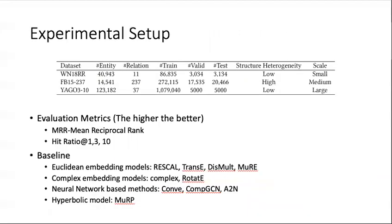Here is the experimental setup. We're using three standard datasets which have different structure heterogeneity and scale. We're using the MRR and hit rate at 1, 3, 10 as the evaluation metrics. And we consider multiple baselines, including the Euclidean embedding models, complex embedding models, neural network models, and also the hyperbolic models.